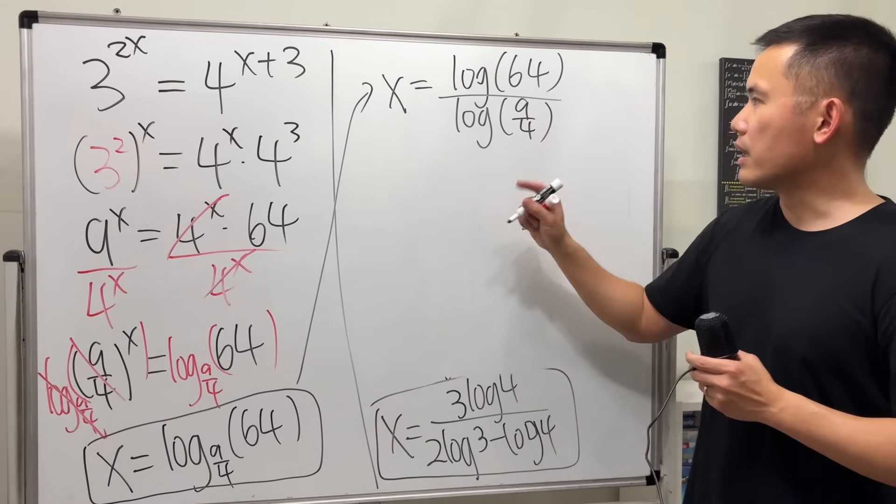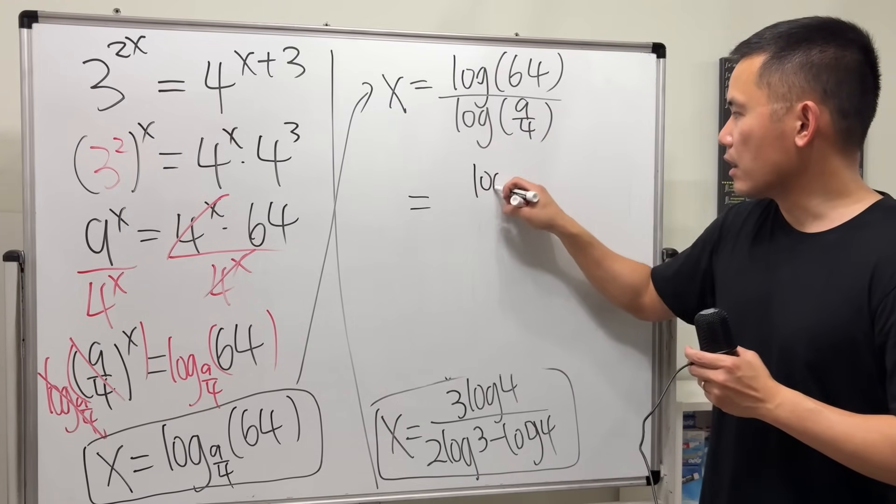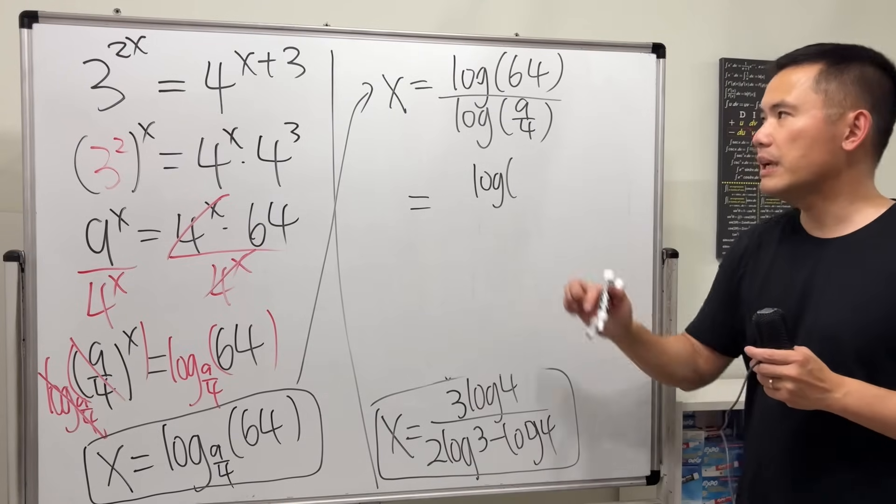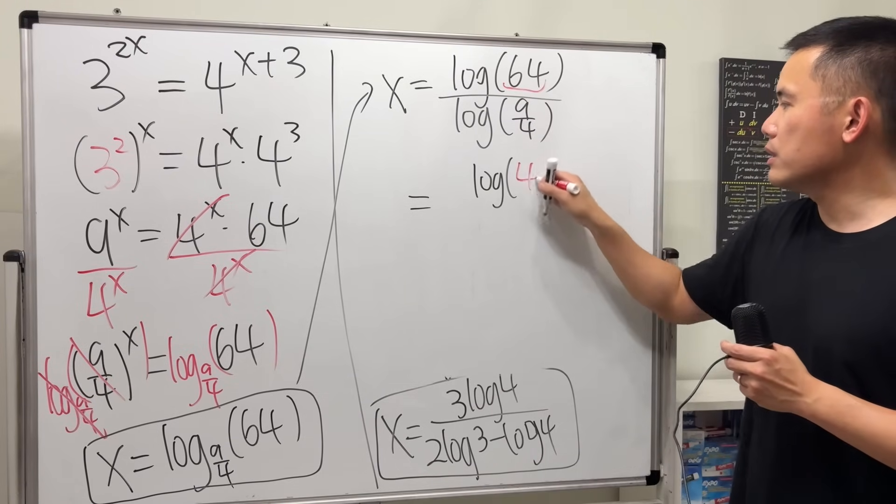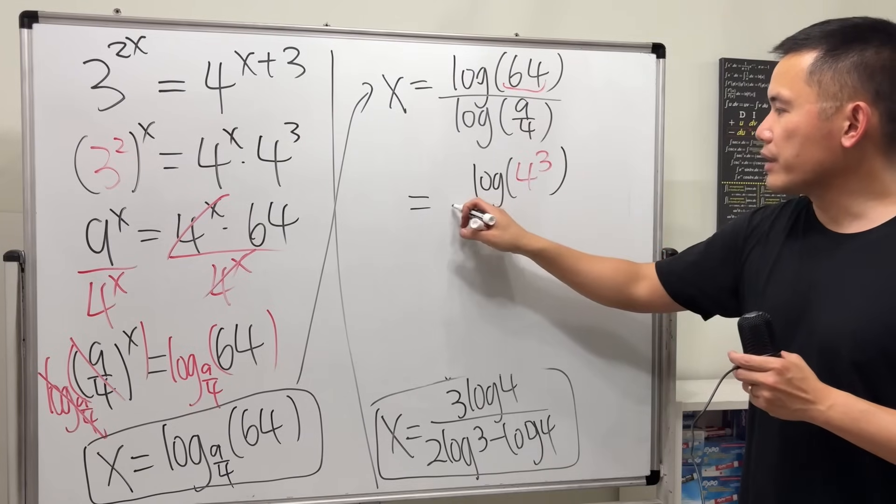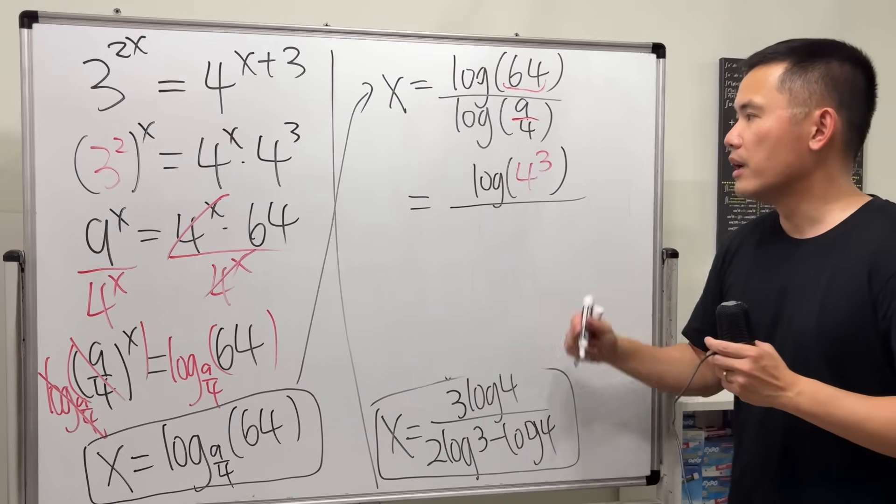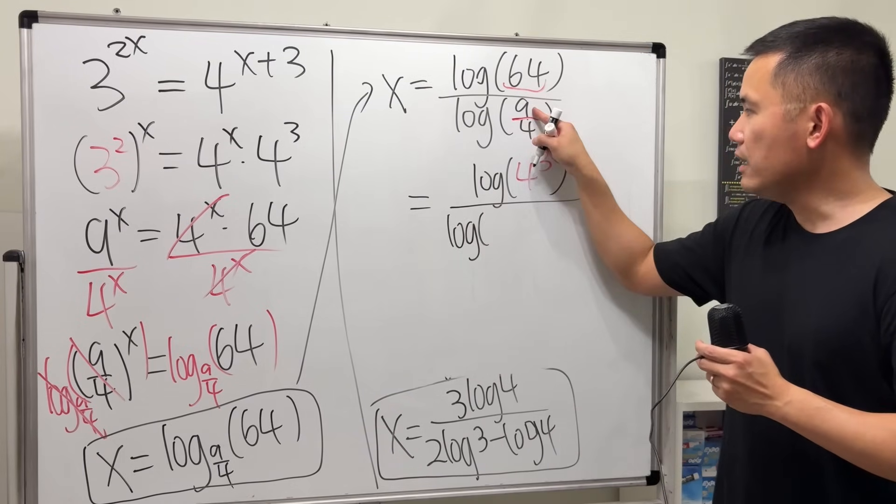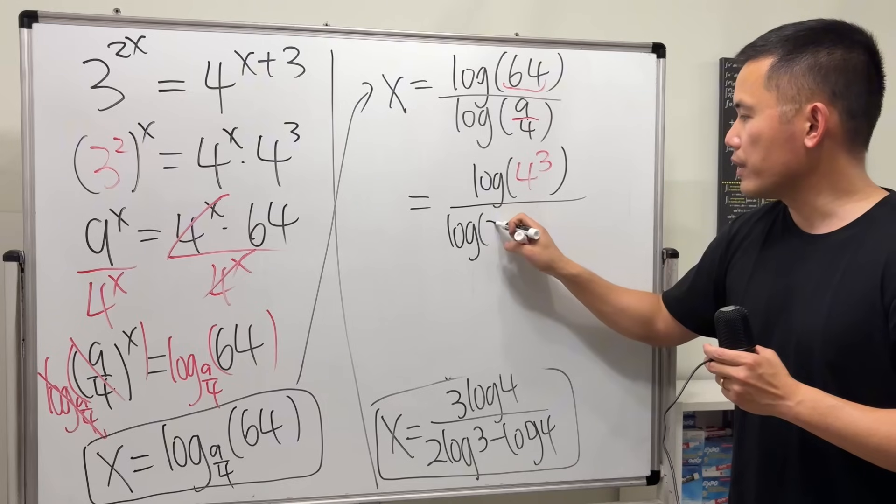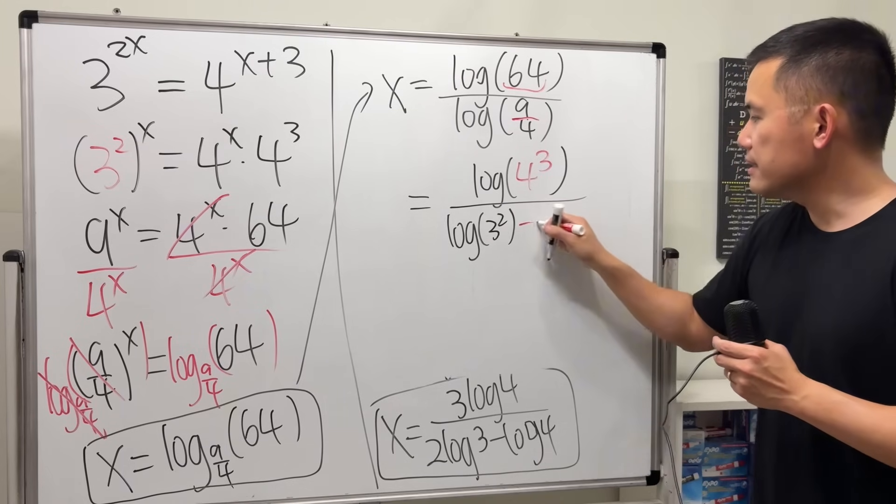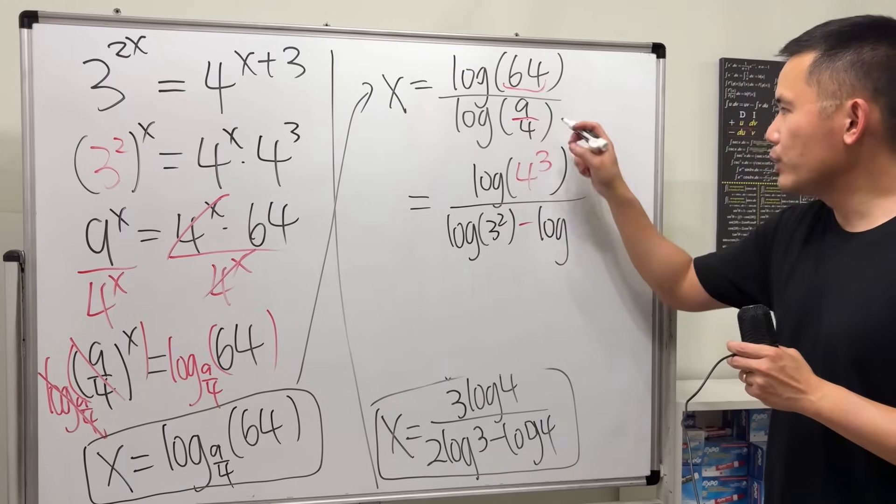And then break it apart. But here, this right here is the same as log of 64, which is the same as 4^3. And then for this right here, because we have a division instead of the log, we can break it apart, making it into log of 9, which is the same as 3 squared, and then minus another log. And then we have 4.